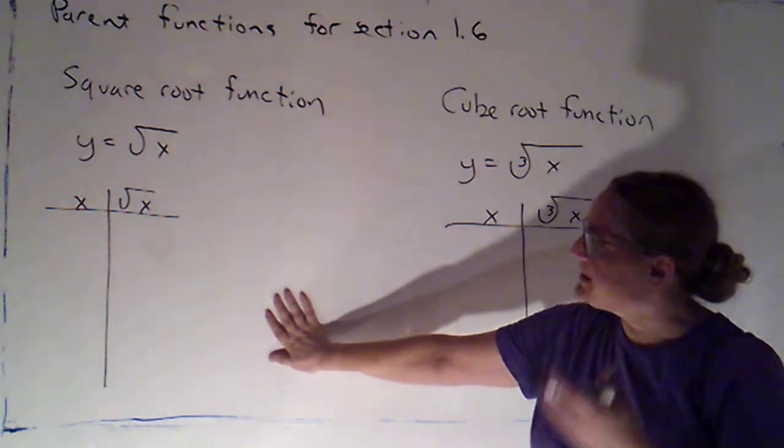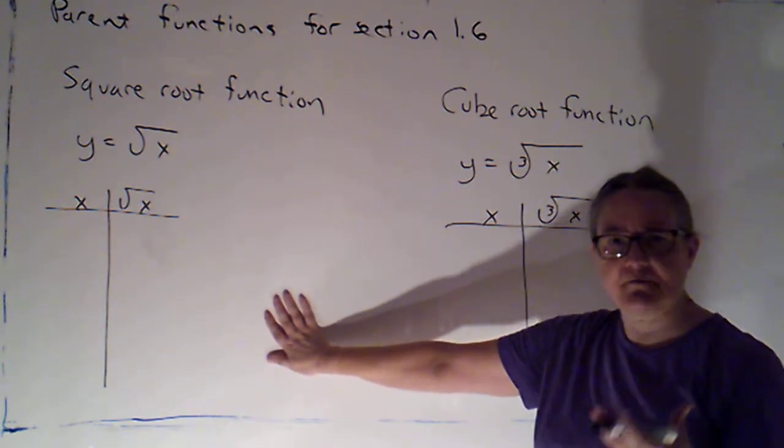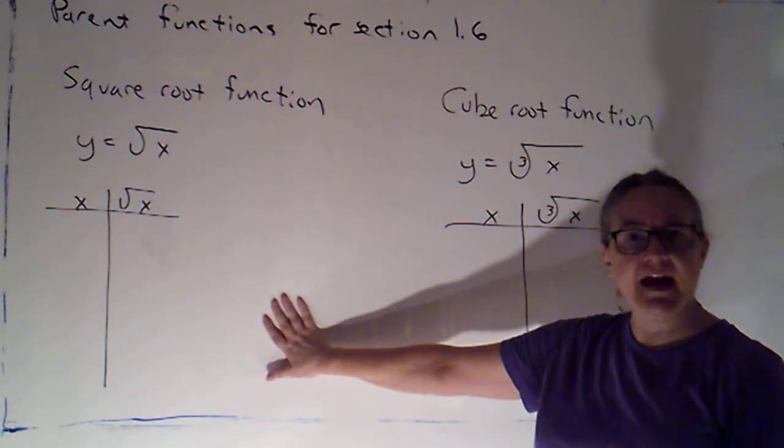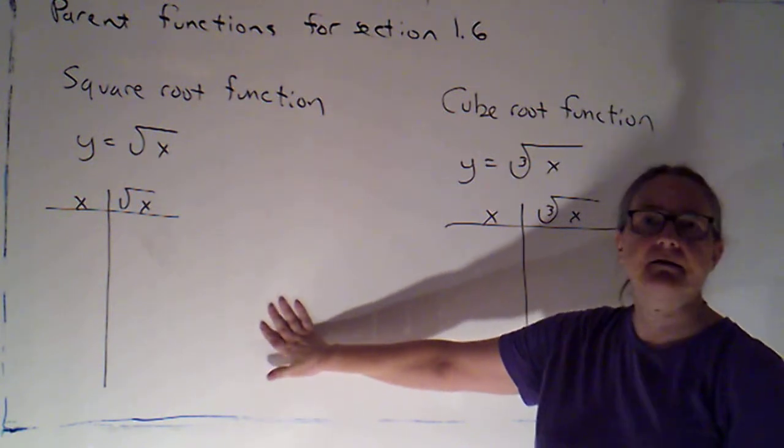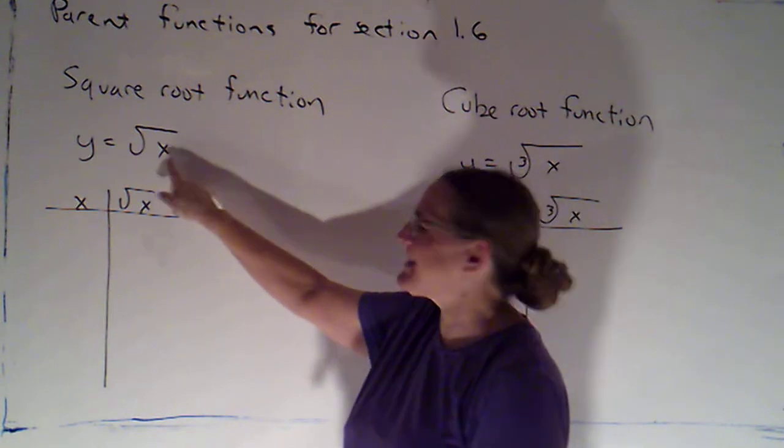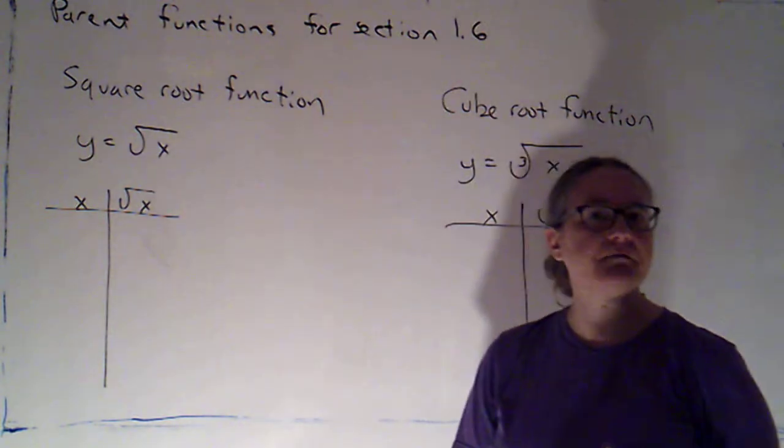I said with the past two examples that usually, unless I have a good reason for doing otherwise, I like to plug in a couple of negatives, 0, and a couple of positives. Well, here I have a good reason for not doing that because I can't plug in a negative number.